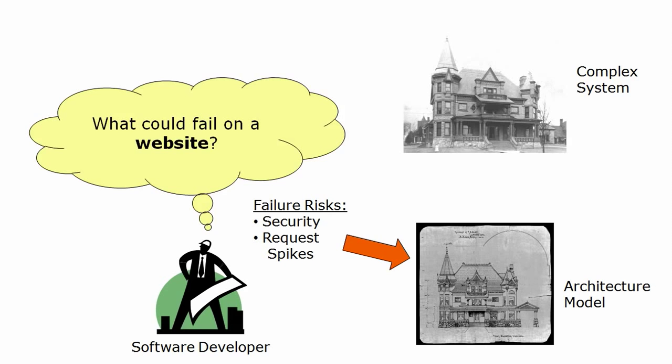Let's say that you're building online software like a website. You might worry about security and request spikes, and you'd build a model to help you reason about those risks. If you're building embedded software like a thermostat, you might instead be worried about memory leaks and portability to new hardware, and you'd build a model for those risks. It would be great to look at every risk, but you only have so much time.